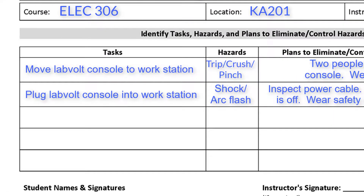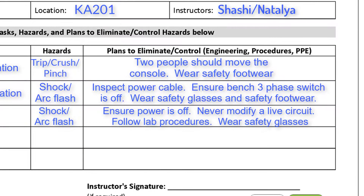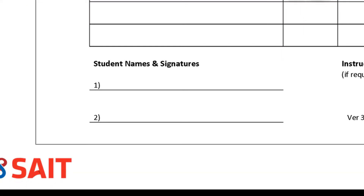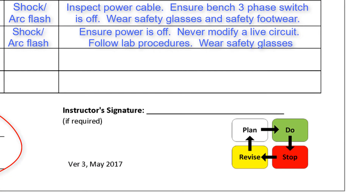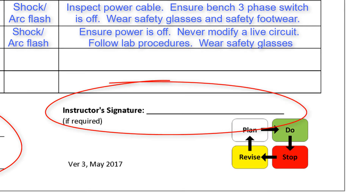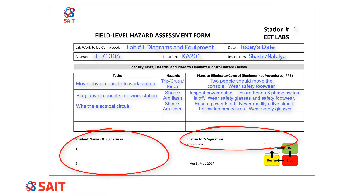Any other tasks required can be identified and recorded. Make sure both lab partners understand and sign the Field Level Hazard Assessment form. Have your instructor review your FLHA. Your instructor will keep one file copy and you must keep a copy in case you are asked to present it in an audit. After the FLHA is complete, you can start your lab experiment.